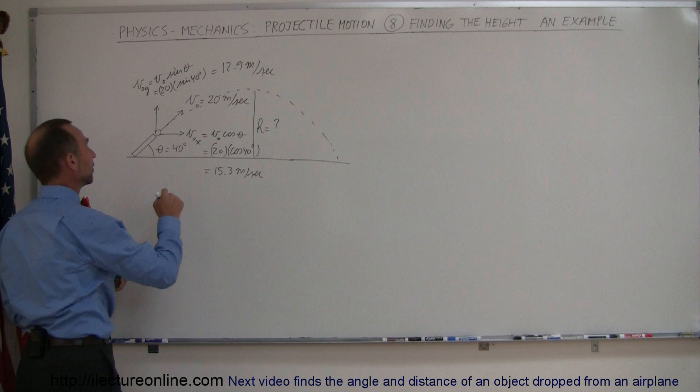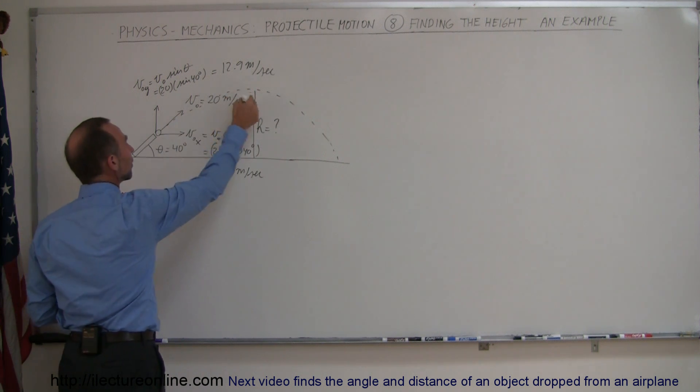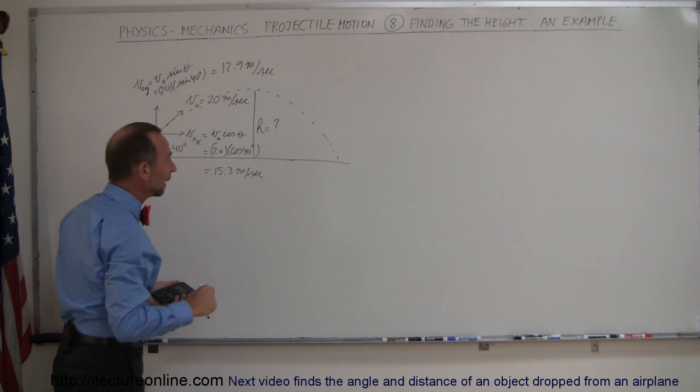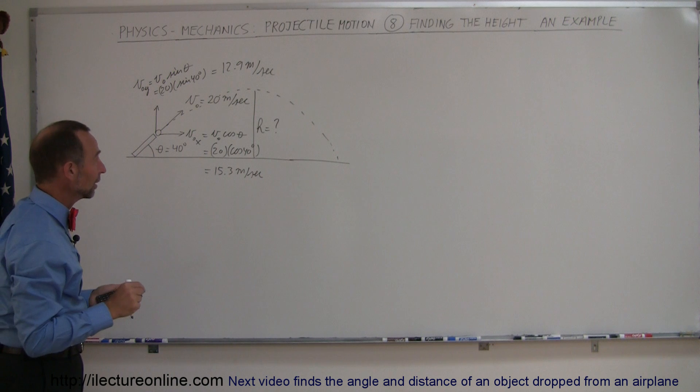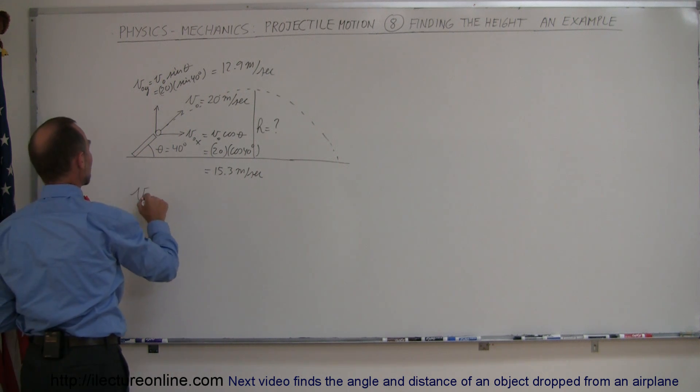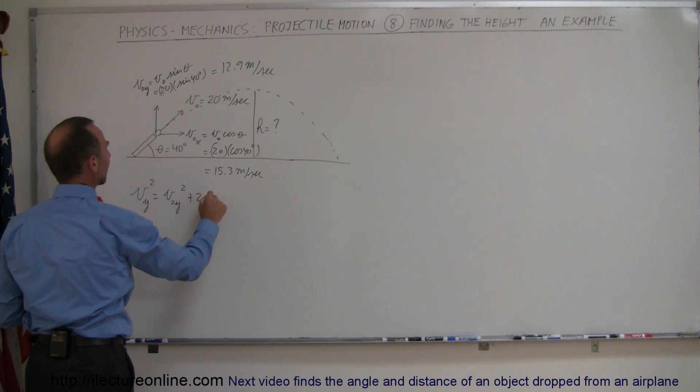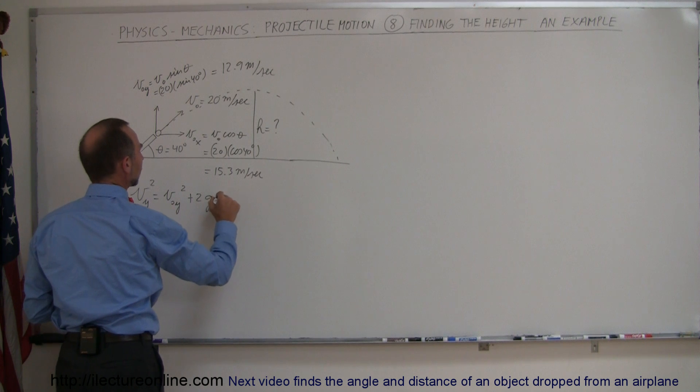Alright, now the next thing is realizing that when I reach the maximum height the velocity in the y direction is going to be 0 momentarily, so I can use this equation that v in the y direction squared is equal to v initial in the y direction squared plus 2 times acceleration g times the change in the height.